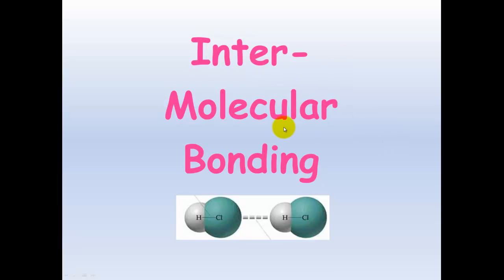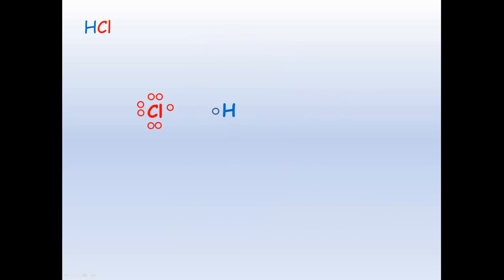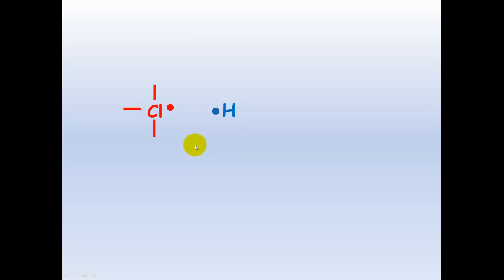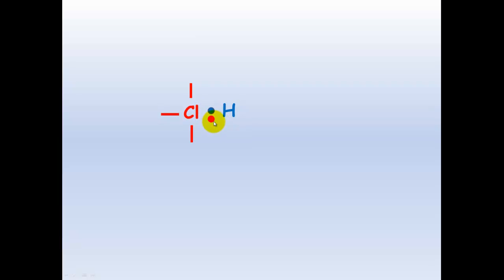Intermolecular bonding — inter meaning between molecules, so the bonding between molecules. To understand the bonding between molecules, we first need to understand how molecules are bonded together. This is via covalent bonding. Using hydrochloric acid as an example: hydrogen has one electron in its outer shell and chlorine has seven. To get a full outer shell, they each share one electron, forming a single covalent bond.